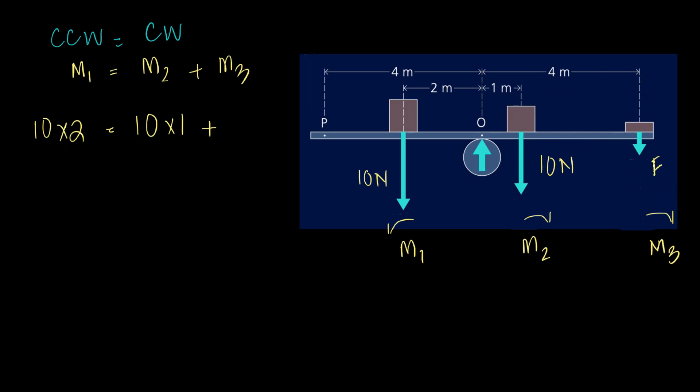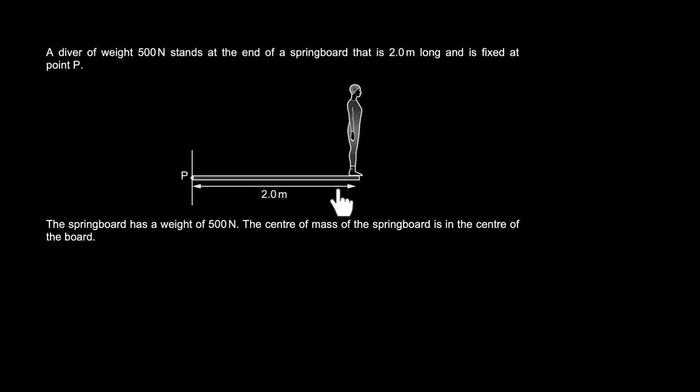Plus M3, which we don't know the force—we're trying to calculate it—but it's 4 meters away, so that's F times 4. So that's 20 equals 10 plus 4F, and that's 4F equals 10, and F now equals 2.5 Newtons. If I put a mass weighing 2.5 Newtons over here, the entire system will be in equilibrium and I can balance it like that.